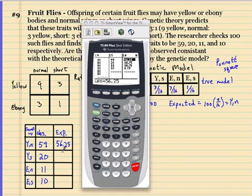My expected would be 56.25. And I'll say it once again. The observed have to be whole numbers. It cannot be decimals.